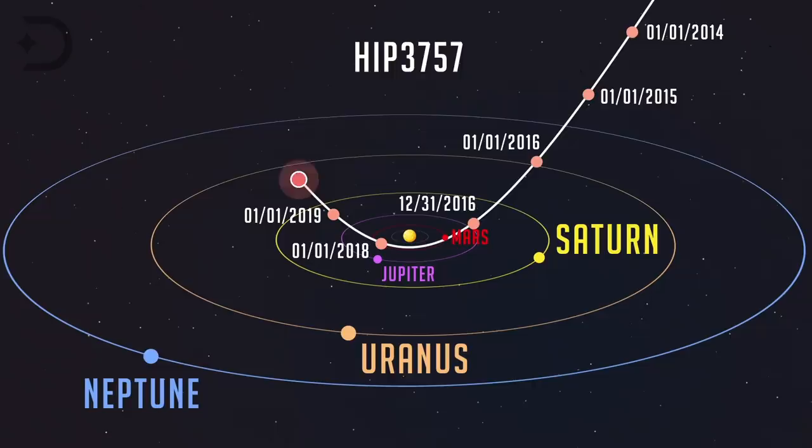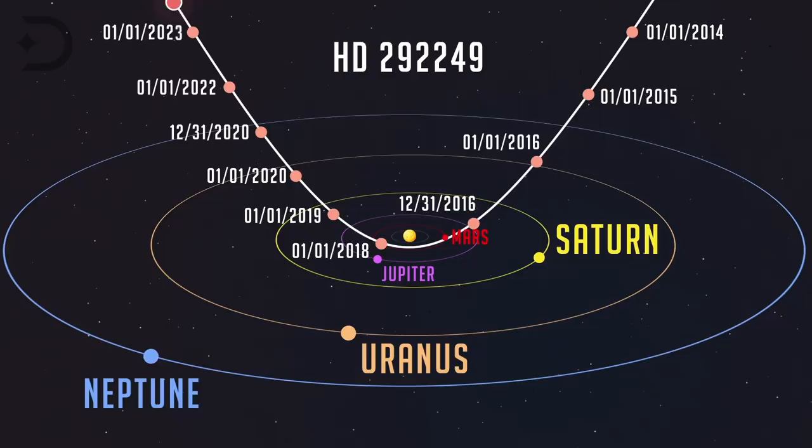But some think it has come from a more likely candidate, a sun-like star catalogued HD 292-249. And there are two other stars where the object could have come from, but very little is known about them.